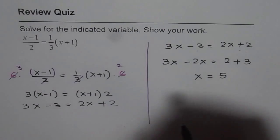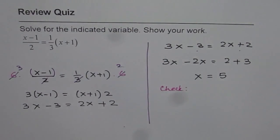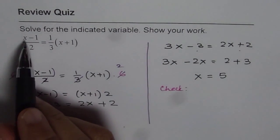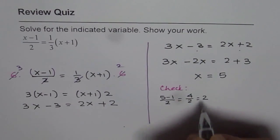So what we can also do at this stage is check if 5 really works. If I substitute 5 on the left side I get 5 minus 1 over 2 which is 4 over 2 which is 2.